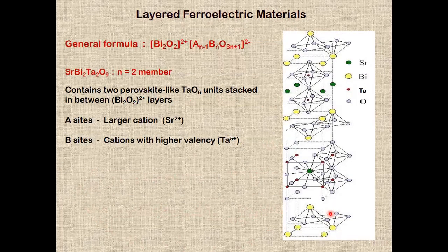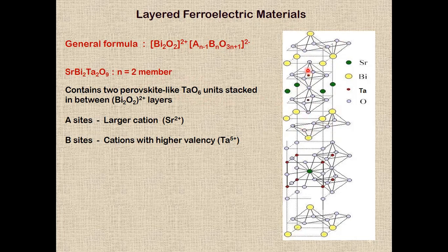The crystal structure of strontium bismuth tantalate (SBT) belongs to the n=2 member of the Aurivillius family of ferroelectric oxides, meaning it contains two perovskite-like TaO6 octahedral units stacked between bismuth oxide layers. The A-sites are occupied by the larger cation Sr²⁺ and the B-sites are occupied by cations of higher valency, Ta⁵⁺.